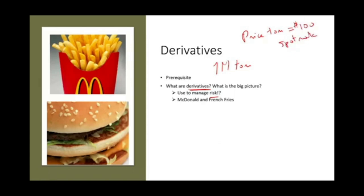But McDonald's needs that 1 million tons not today — they need that 1 million tons maybe 6 months from now. And 6 months from now, do we know how much the potatoes will be? 1 million tons of potato — we really don't know. The price could be $105, the price could be $80, depending on the season. If there's an abundance, the season has a lot of potatoes in Idaho, the price might drop to $80. Or if there was a drought, the price might jump to $120.